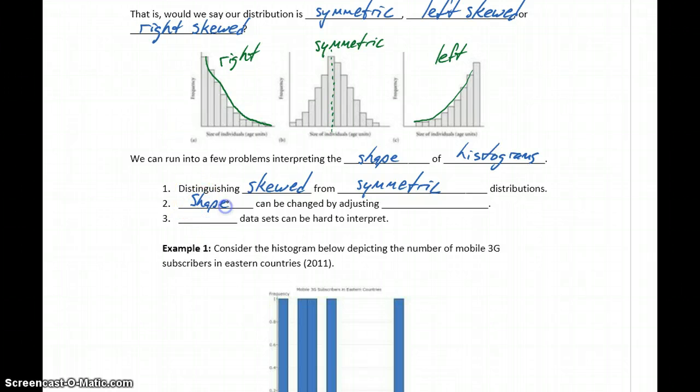We also know that shape can be adjusted by changing the bin widths for your histogram. Sometimes that can result in very different pictures, depending on whether you use very large, very small bin widths, or somewhere in between.